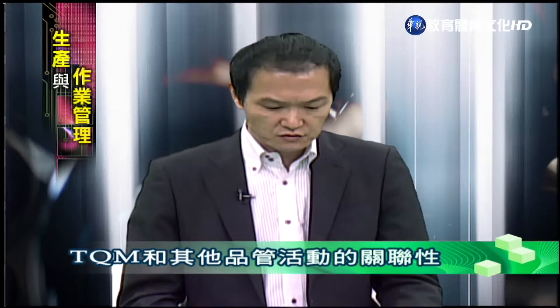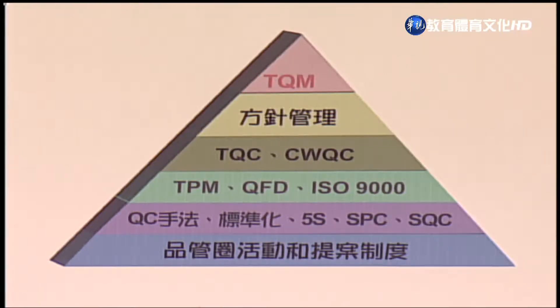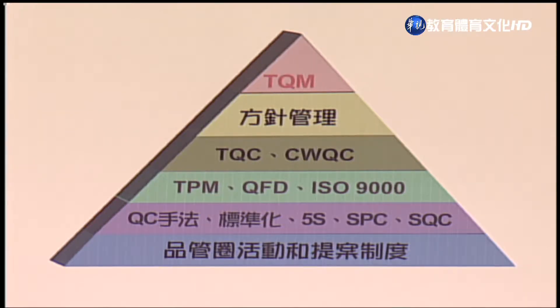TQM全面品质管理，最主要是由高阶主管进行领导统御，在管理面来达成，把这样的理念灌输到每个部门，由高阶一直往下，到每个最小的单位。从组织图上可以看到，这个金字塔图高层相当于TQM比较高阶的主管，依序底下就是比较低阶的单位。